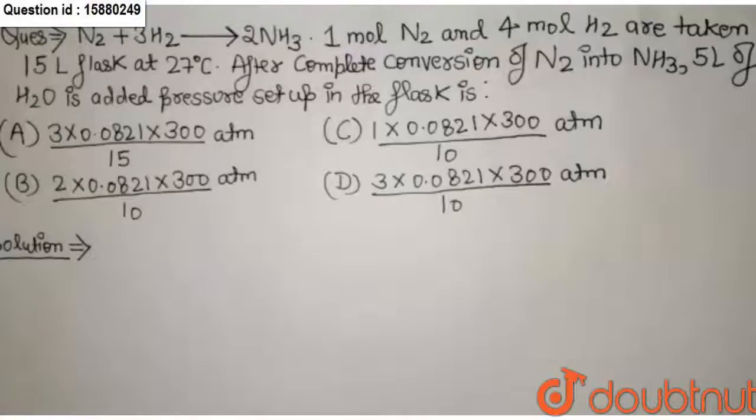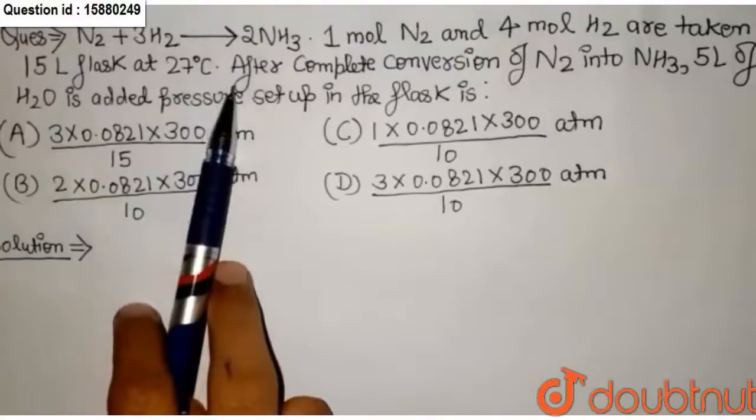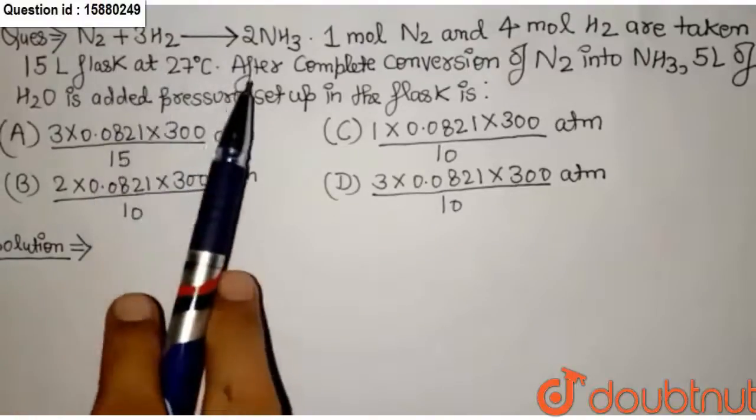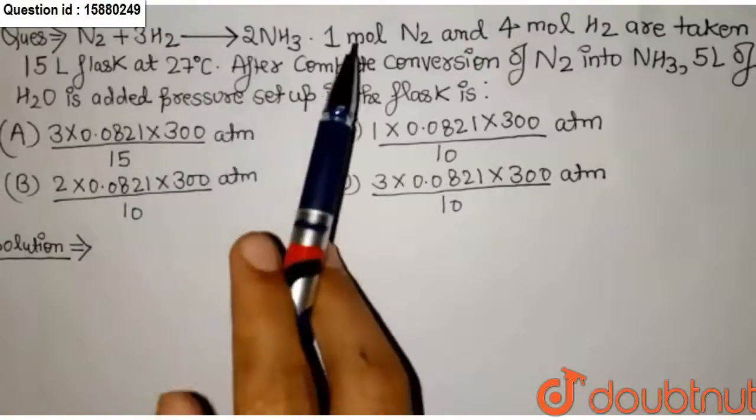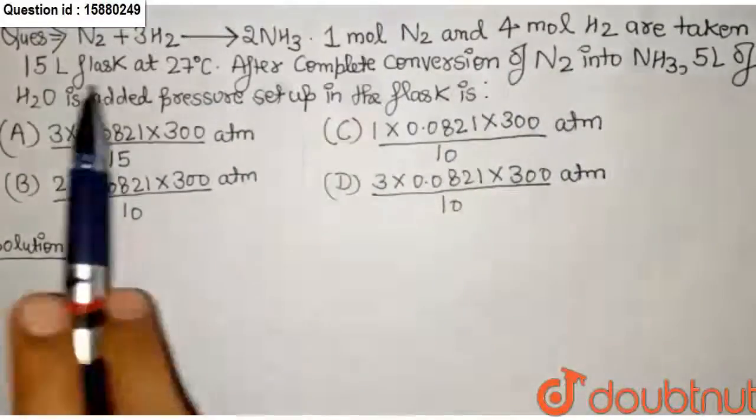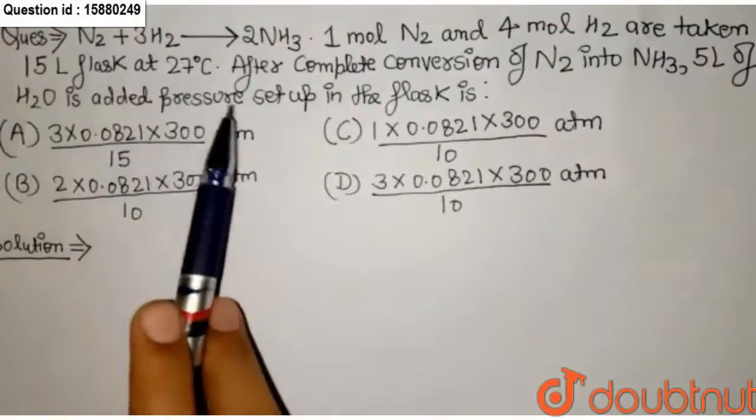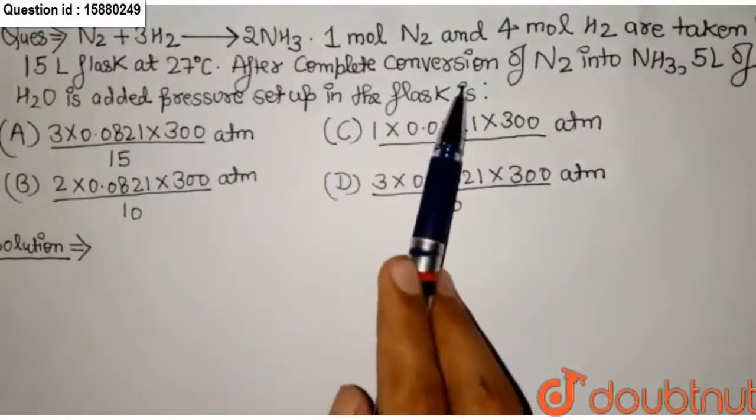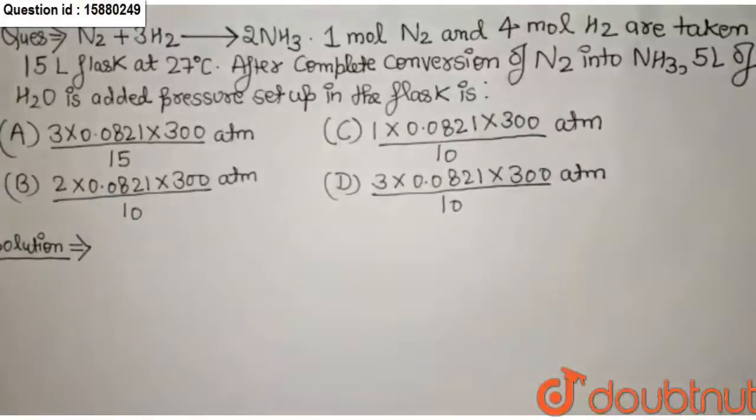Hello friends, today we will discuss questions about N2 plus 3H2 converted into NH3. 1 mole of N2 and 4 mole of H2 are taken in 15 liters of flask at 27 degrees Celsius. After complete conversion of N2 into NH3, 5 mole of H2 is added. Pressure set up in the flask.